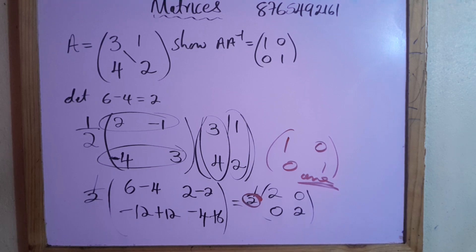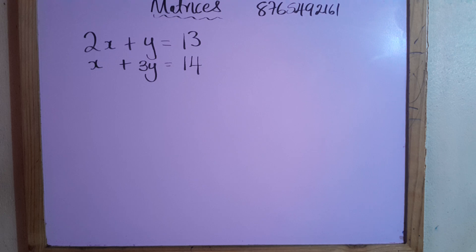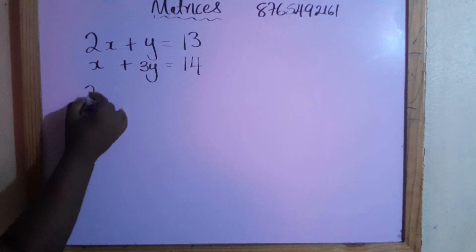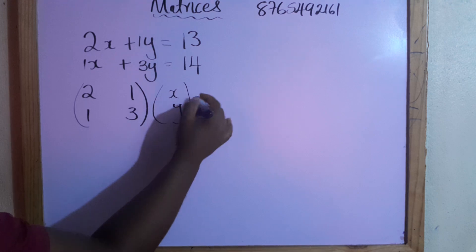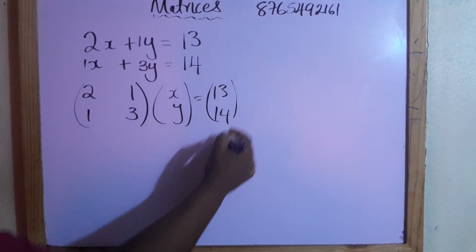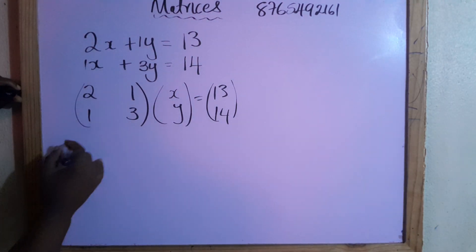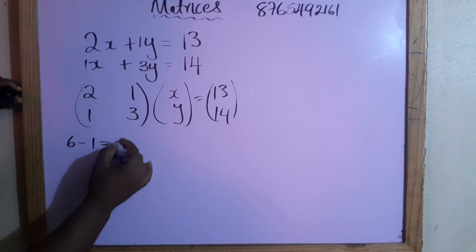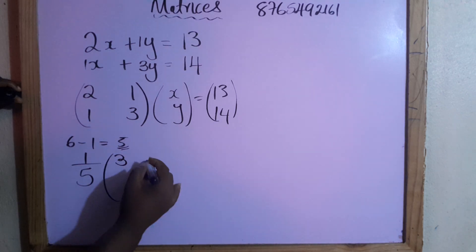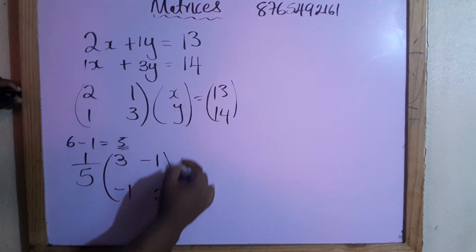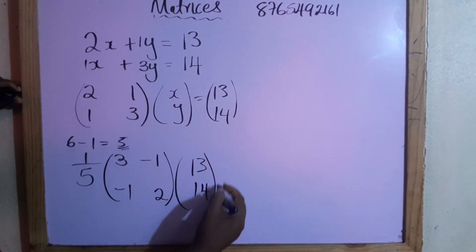Let's look at solving simultaneous equations using the matrix method. Given: two x plus y equals thirteen, and x plus three y equals fourteen. Write the coefficients as a matrix: two, one, one, three — times the column vector x, y — equals thirteen, fourteen. We find the inverse: the determinant is two times three minus one times one equals five. So it's one over five times the adjoint matrix: three, negative one, negative one, two.